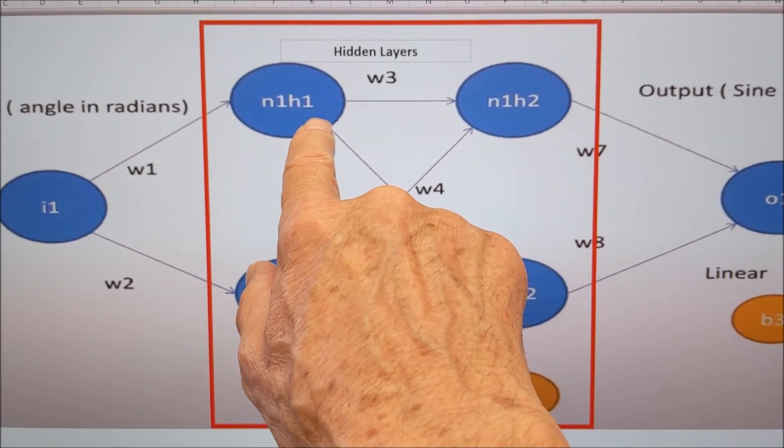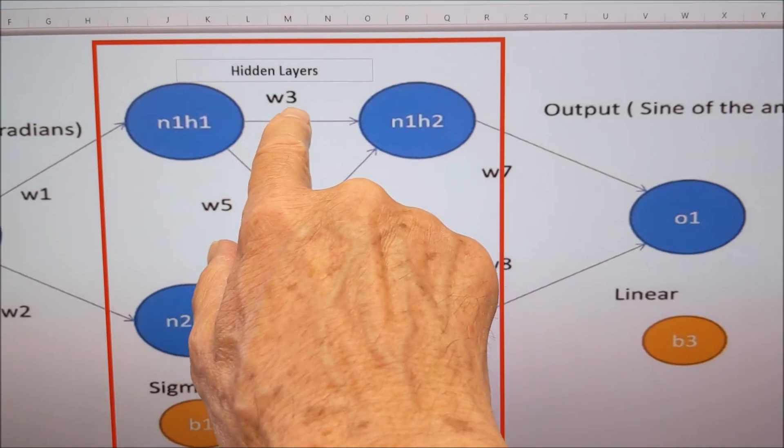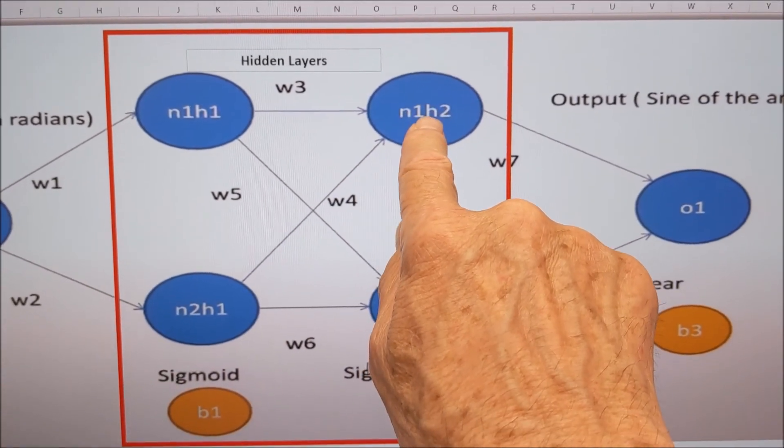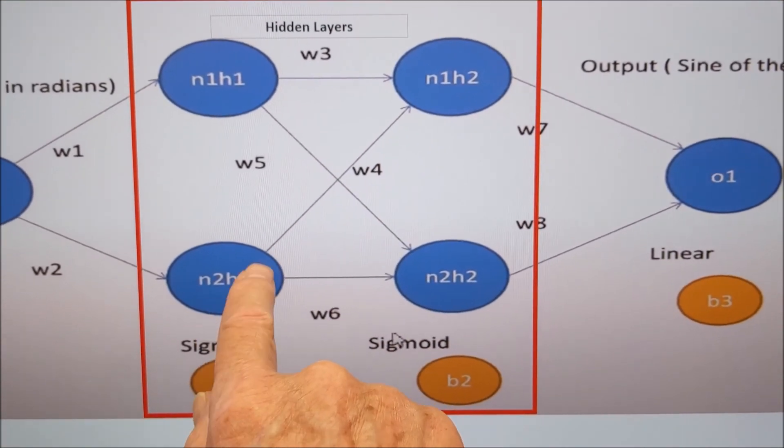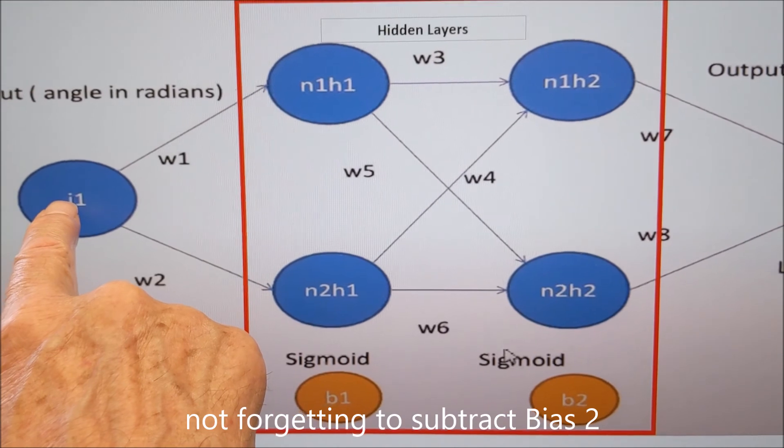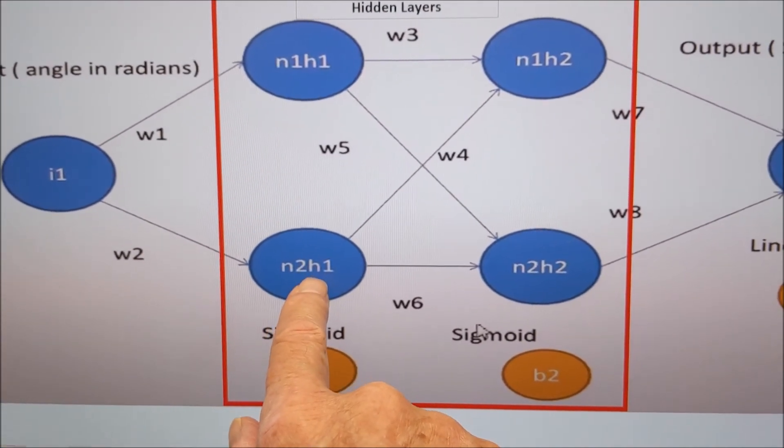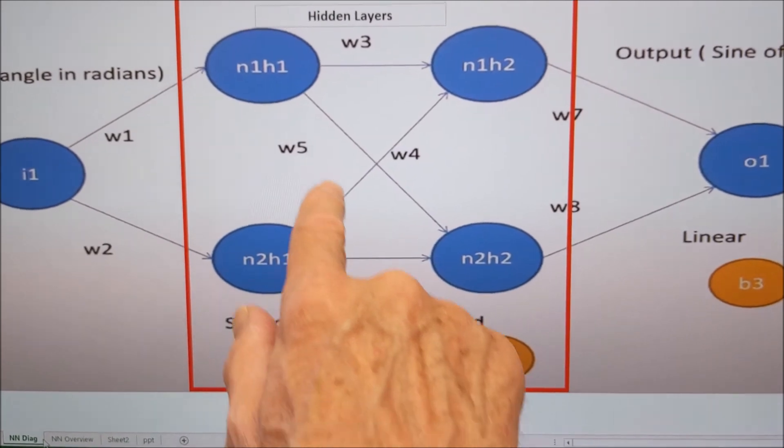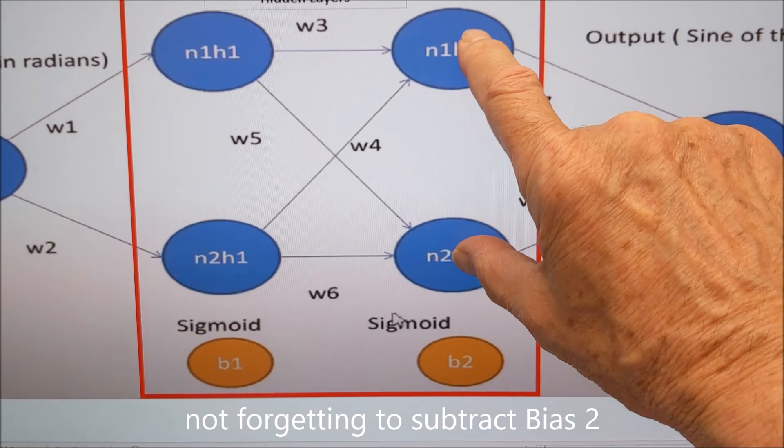Once we've got that value, how do we get this value of 1,2? Easy. We get this value and multiply it by W3. To get that, not forgetting we have an input from this neuron as well. So we take this value, multiply it by W4 and add the two together. And it's the same with here. Take this input times W2 to get that value 2,1. Then to get 2,2 value, we multiply this value by W6 and add it to 1,1 value times W4 to get 2,2.